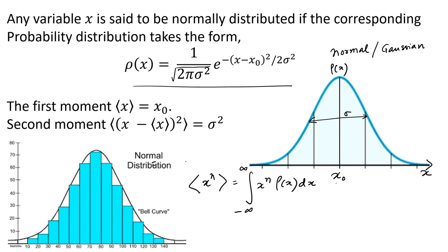The number of students doing very well and very poorly are small. The distribution of marks obtained by students follows this bell shape, with variance described by the full width at half maximum. The smaller the sigma, the sharper the distribution, indicating the teacher has done a good job in setting and teaching the course.